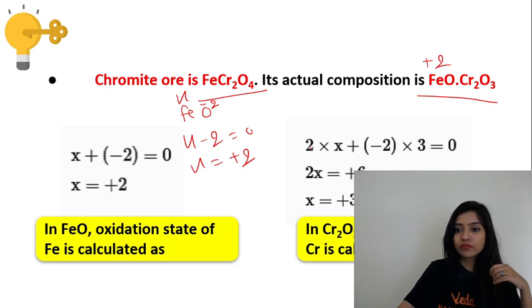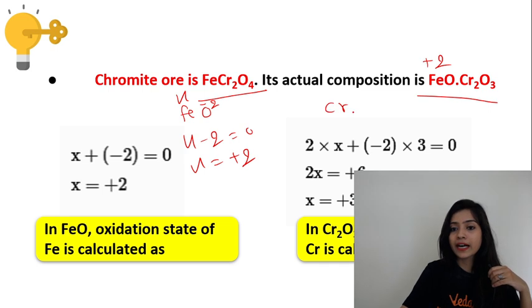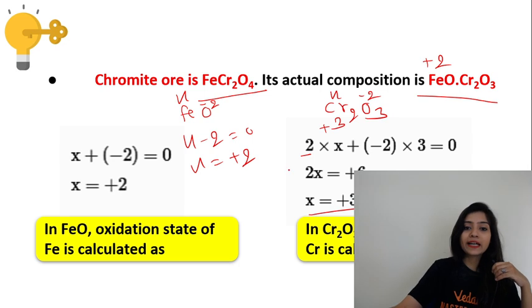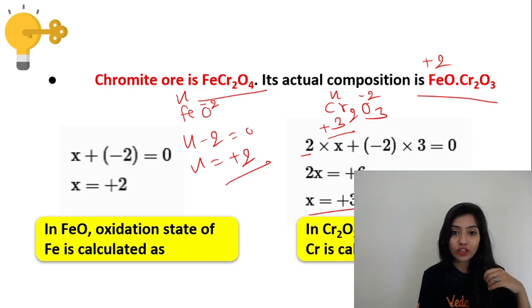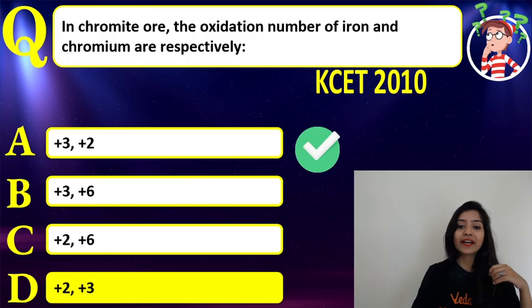Now let's see chromium. Here we have Cr2O3. You have 2 chromium, every one of them has x oxidation state. Plus oxygen minus 2, and you have 3 oxygen. So 2x plus 3 into minus 2 equals 0. 2x equals plus 6, and x equals plus 3. So chromium has plus 3 oxidation state. Iron has plus 2 oxidation state and chromium has plus 3. So your correct answer is D.